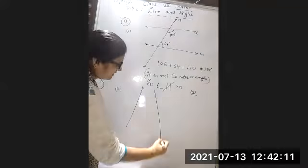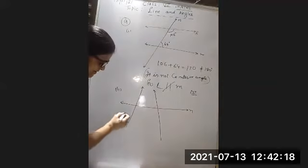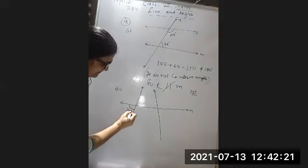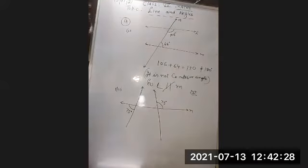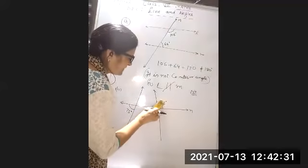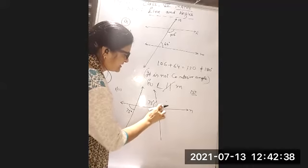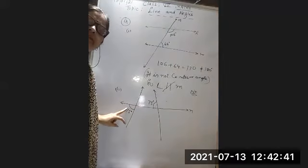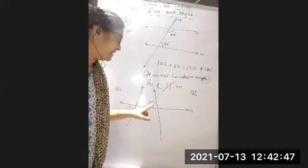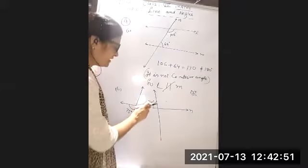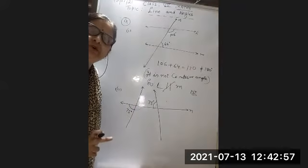These lines are intersecting and the angle is 75 degrees on this side. If the 75° angle were on the other side, these lines would be parallel because it would be an alternate exterior angle. But the angle is given inside — making it an alternate interior angle. However, no rule is applicable here.